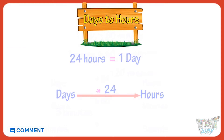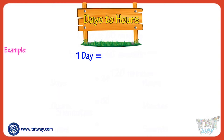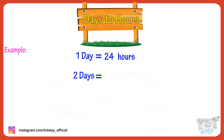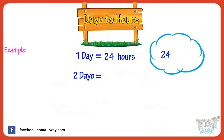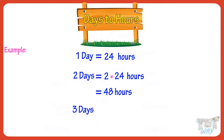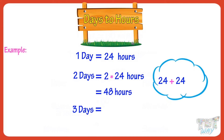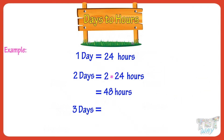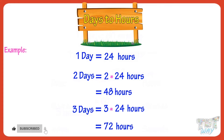Let's see some examples. One day equals 24 hours. So two days will be 24 plus 24, or 24 multiplied by 2, equals 48 hours. Now let's calculate the number of hours in three days. Three days equals 24 plus 24 plus 24, or 24 multiplied by 3, equals 72 hours.